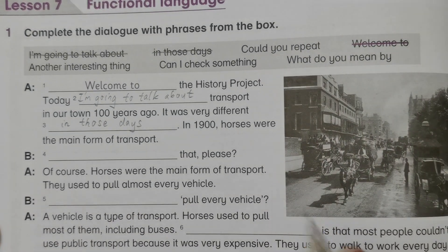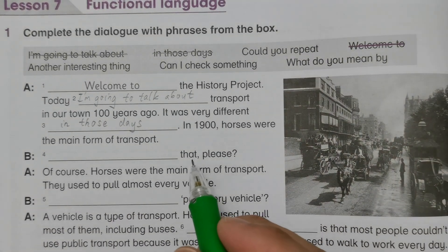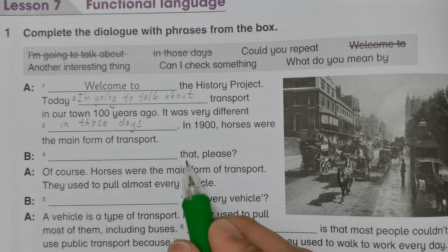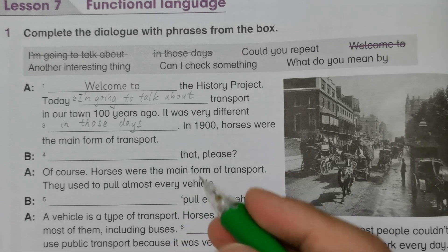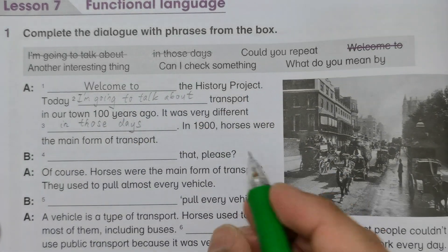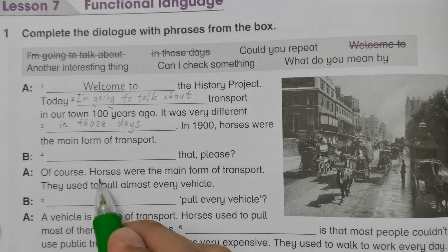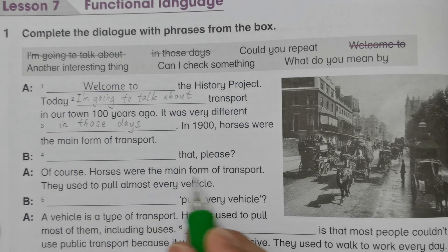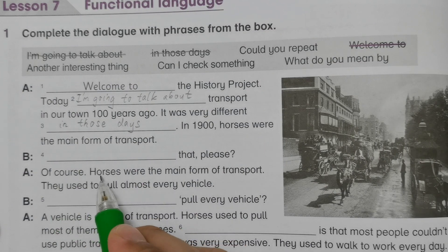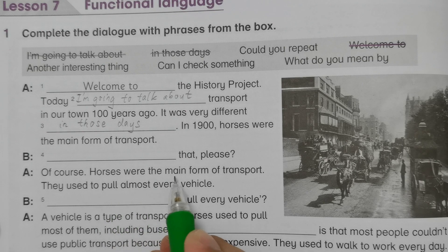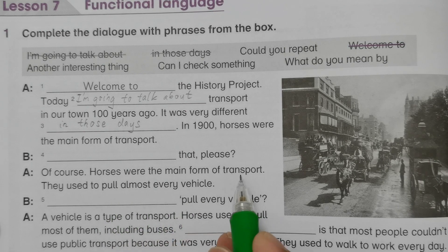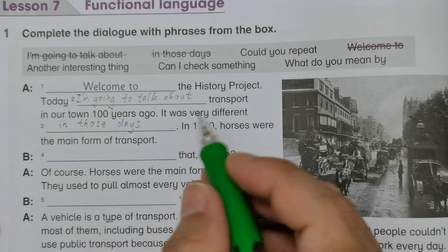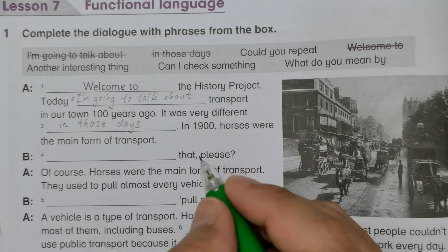And B stated as: could you repeat that, please? So because this one is repeated here. So of course, horses were the main form of transport. So this one should be: could you repeat that, please?